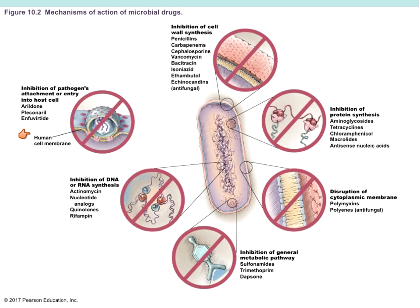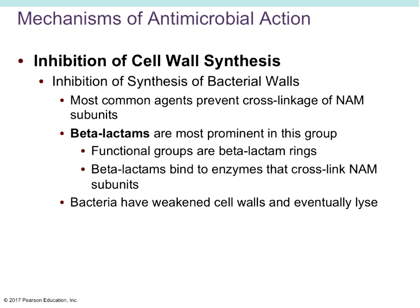Inhibition of pathogen attachment or entry is a drug class that keeps cells from getting into the host cell. This is most notably used against viruses — the way viruses continue their life cycle is by getting inside the host cell. By inhibiting the pathogen's attachment to the host cell, it keeps the virus from getting in and using the host cell's machinery to replicate. If viruses can't use the host cell's machinery, they can't make copies of themselves and continue to make the patient sick.